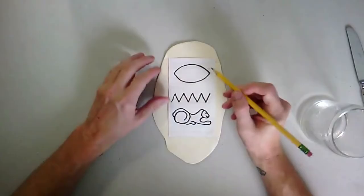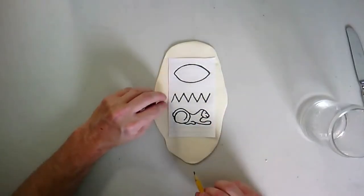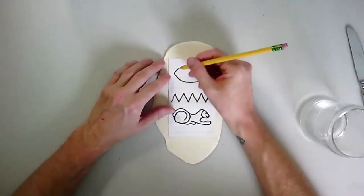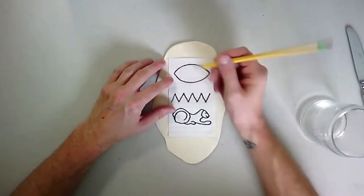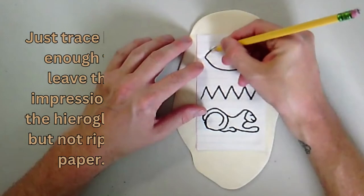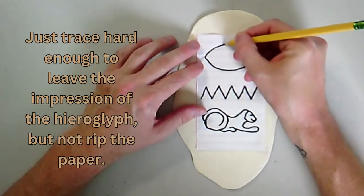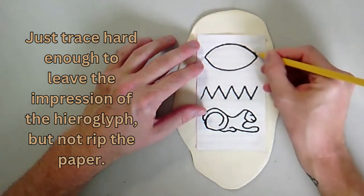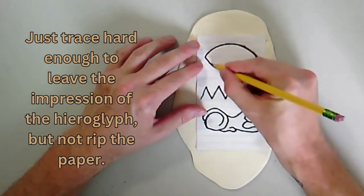So my first couple of initials are pretty easy. My last initial is the lion which is going to be kind of hard to draw. I'm just going to go with my pencil and not pushing too hard in. I don't want to break that paper. Just push enough so that the impression will be left on the clay.